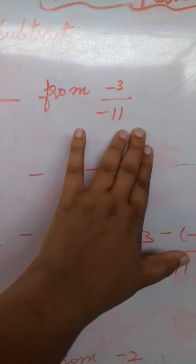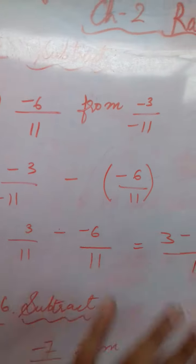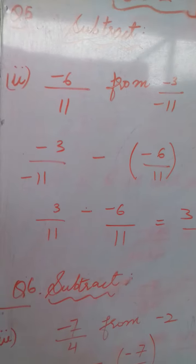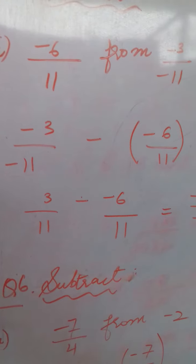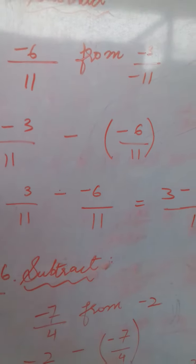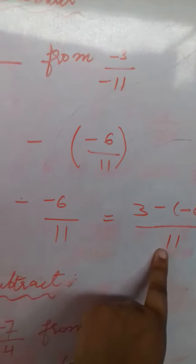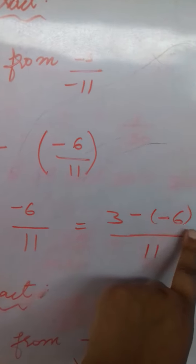This number, this term will come first. Okay. So, minus 3 upon minus 11, minus minus cancels. 3 upon 11 minus minus 6 upon 11. The denominator is same. So, write it here. And 3 minus minus 6.